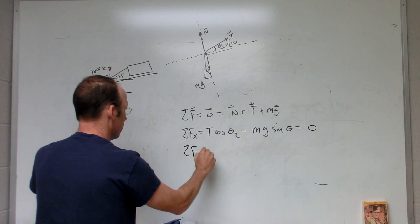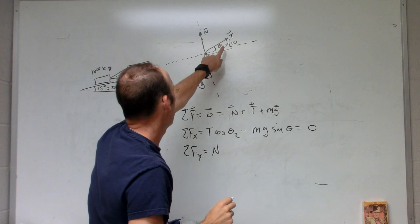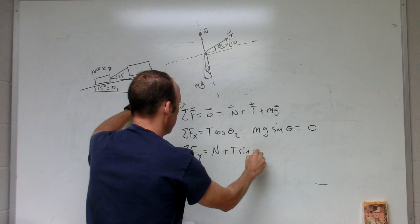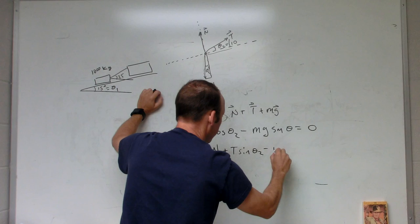I have part of the tension, +T—now that's the opposite side of that triangle, so it's going to be sin(θ2)—and then I have the adjacent side, minus mg cos(θ1).